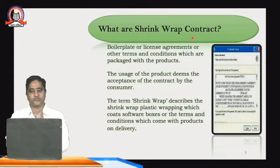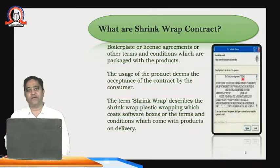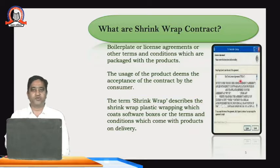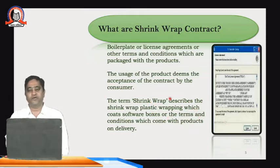Coming to what is a shrink wrap contract. The boilerplate license agreement or other terms and conditions packed with products are called shrink wrap contracts. As shown in the image, where terms and conditions are mentioned and at the end it says 'I Agree' — that type of contract is called a shrink wrap contract. The usage of the product is deemed to be acceptance of the contract by the consumer. The buyer must accept the word 'I Agree'; otherwise he cannot use that particular product.